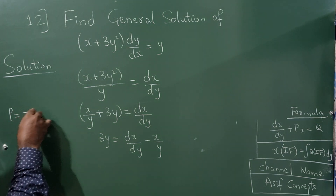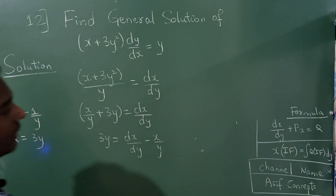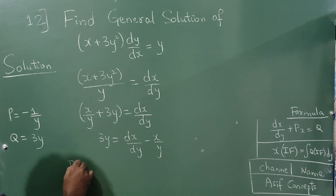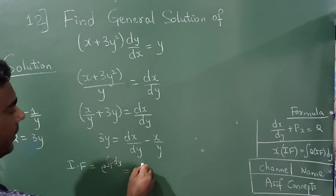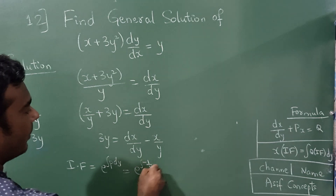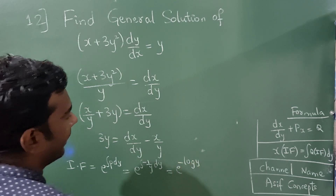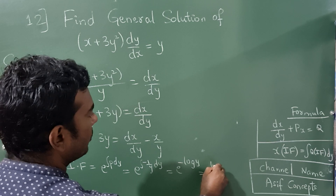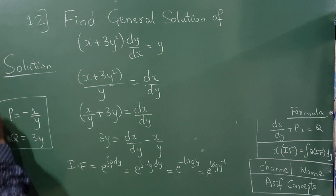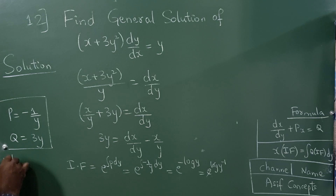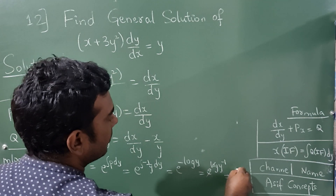From this, the P value is −1/y and the Q value is 3y. Now I need to find the integrating factor. The integrating factor is e raised to ∫P dy = e raised to ∫(−1/y) dy. Using the formula ∫(1/y) dy = log y, this becomes e^(−log y) = e^(log y^(−1)). Since e and log cancel, using m·log n = log n^m, we get y^(−1).